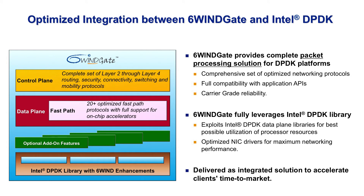The 6Wind Gate networking software is a complete packet processing solution for networking and telecom applications. For Intel Xeon platforms, DPDK is pre-integrated within 6Wind Gate so that the networking stack can fully exploit the data plane libraries and ensure the best possible utilization of processor resources.